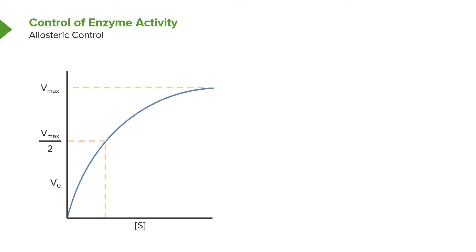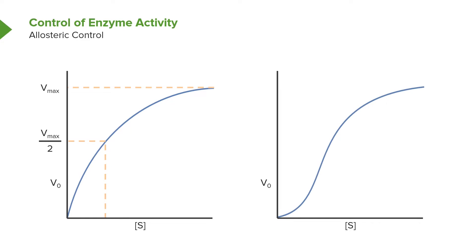The first mechanism I want to talk about is allosteric control. I have discussed this in other presentations, so I'll move through it fairly quickly. Enzymes that obey Michaelis-Menten kinetics display a hyperbolic plot in the plot of V versus S, V being the velocity of the enzymatic reaction. Enzymes that don't behave according to Michaelis-Menten kinetics will oftentimes display a sigmoidal plot, and the reasons for this will be the subject of this talk.